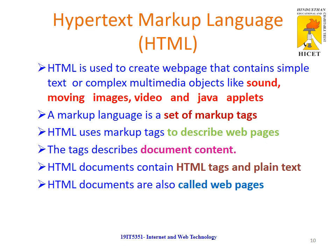The multimedia objects can be sound, images, videos, and applets. We use different tags in the HTML document, and these tags are used to describe how the web page should be displayed. An HTML document contains both tags and plain text, and the HTML document is also called a web page.